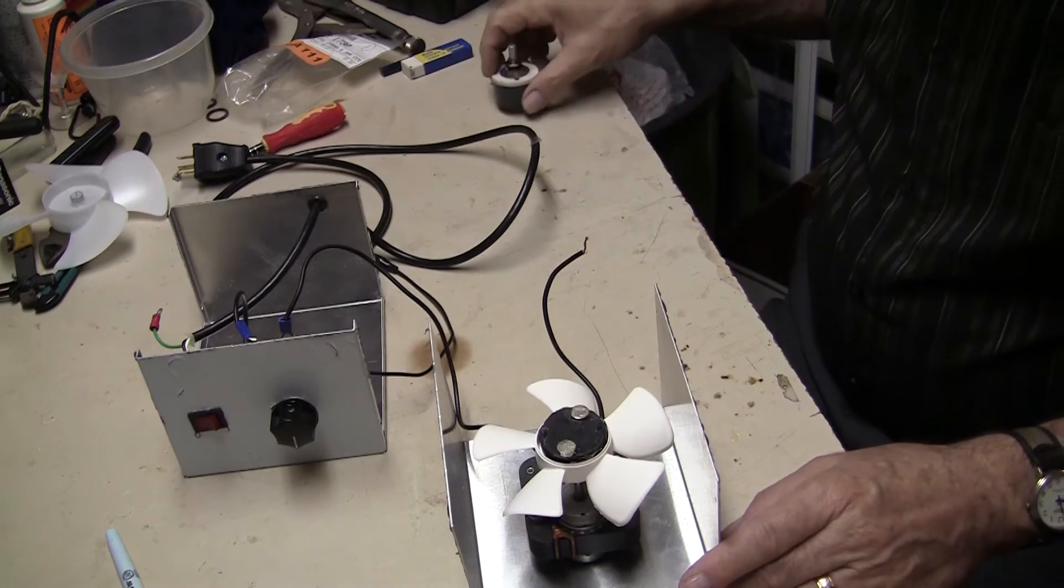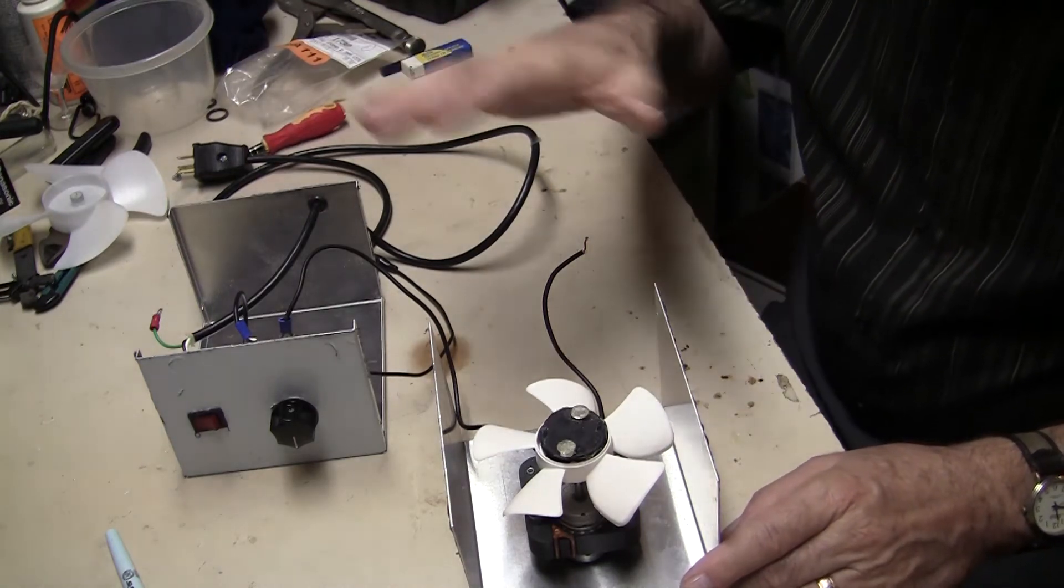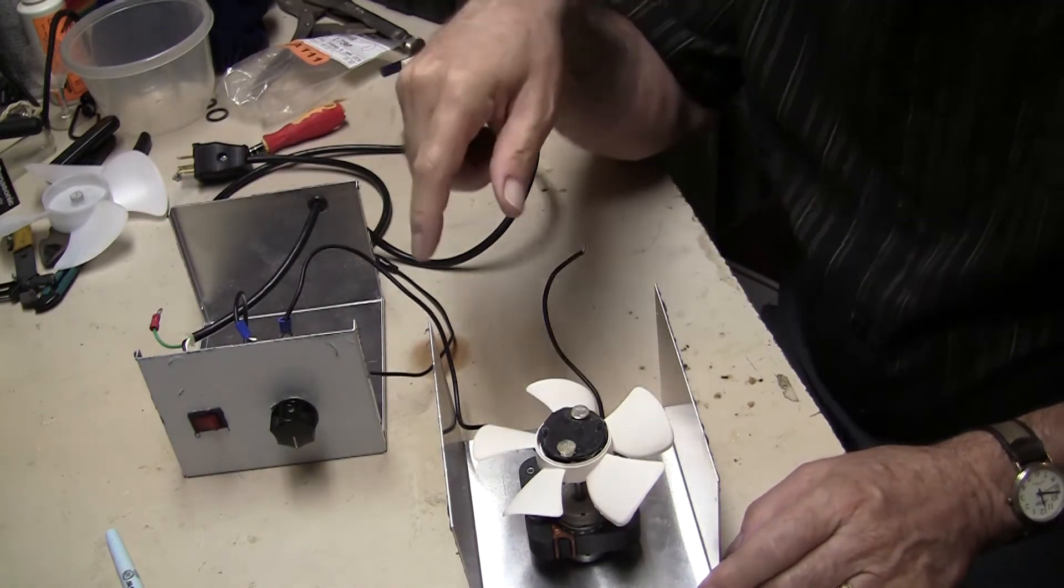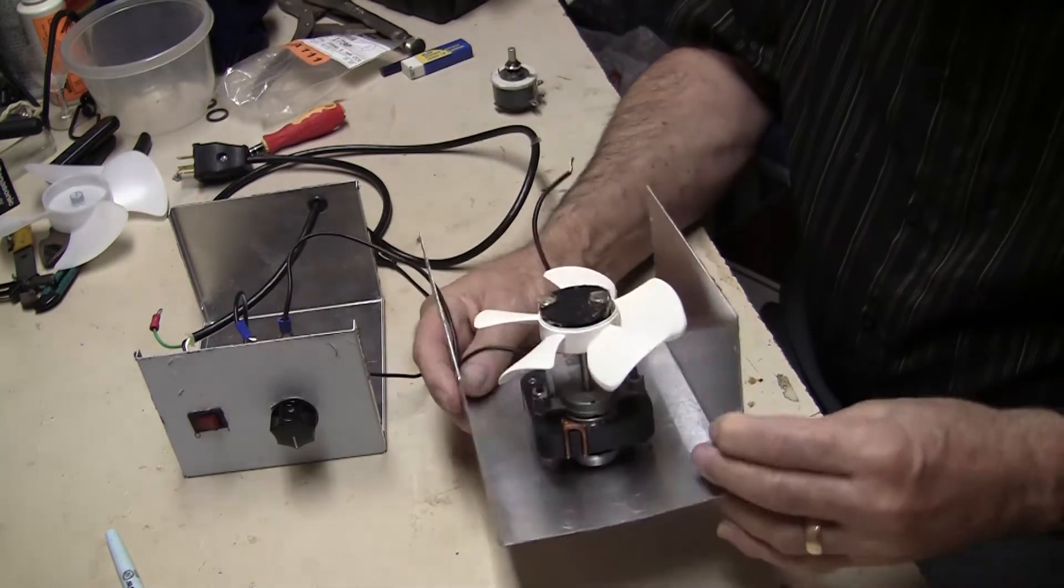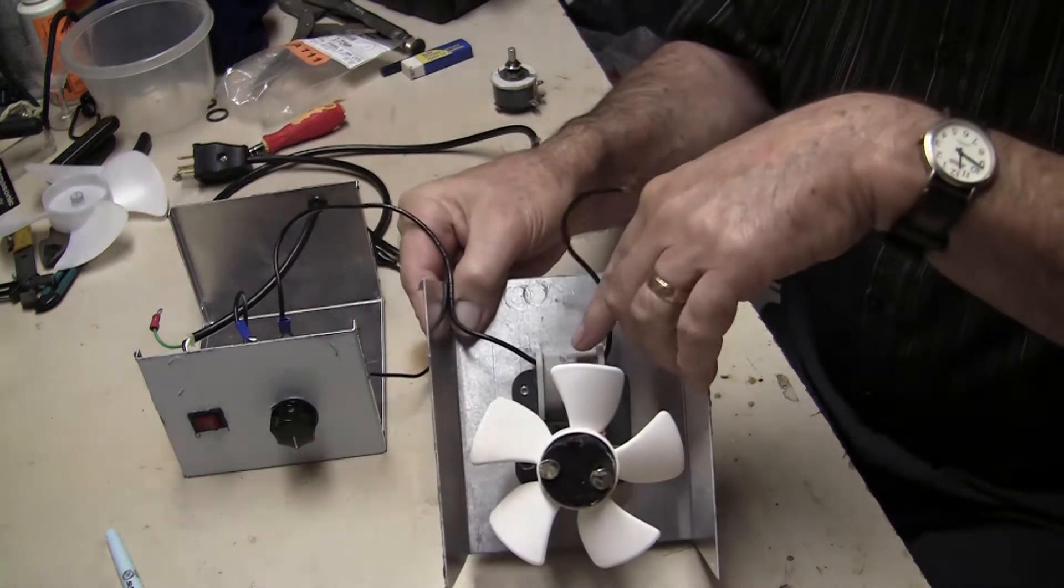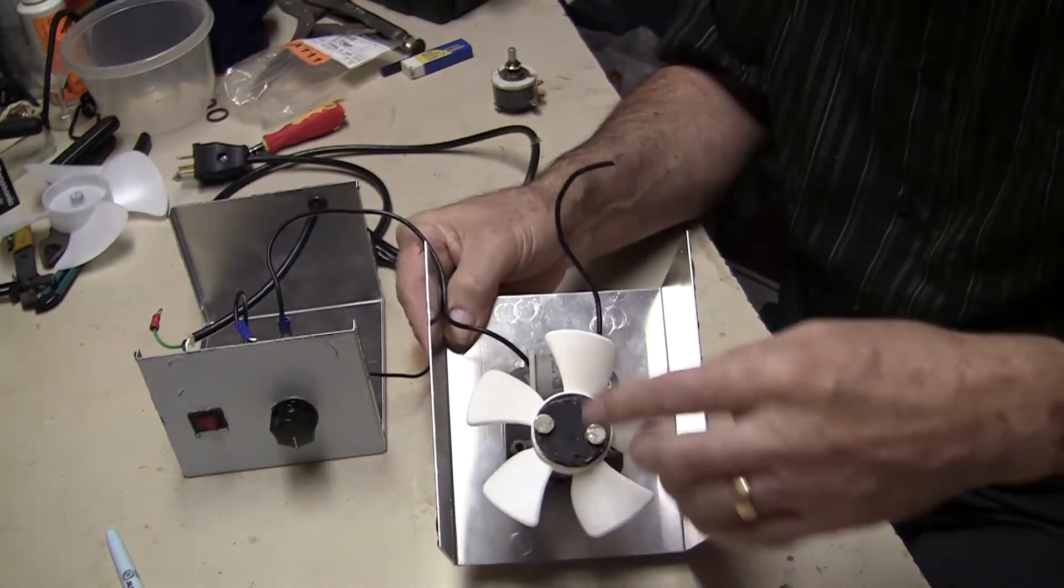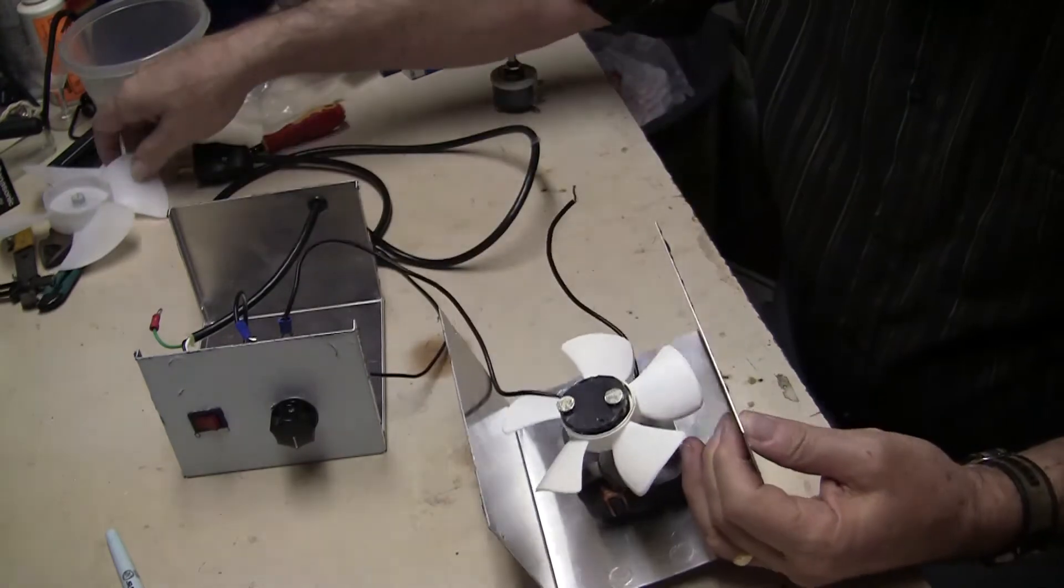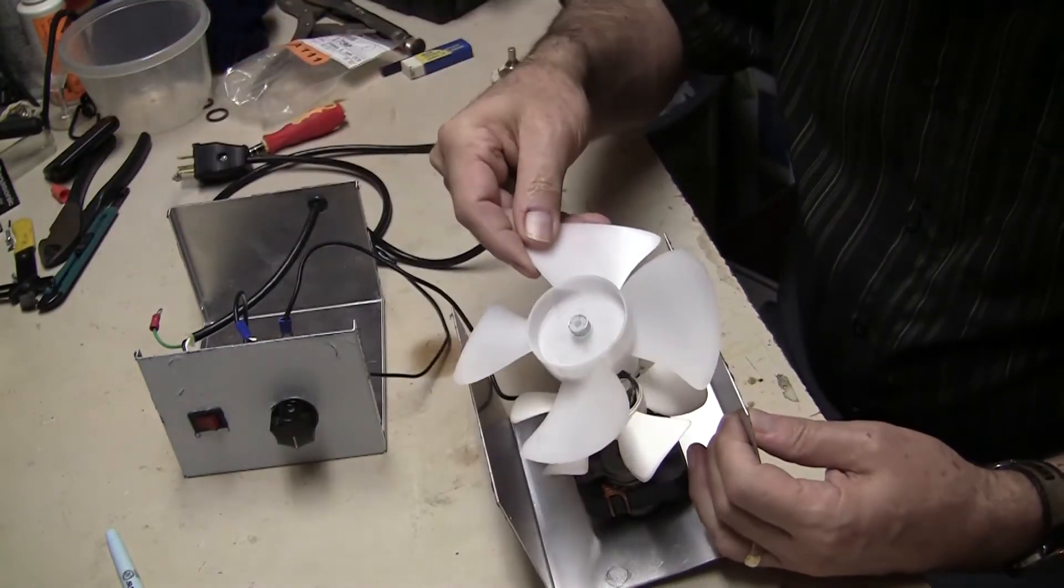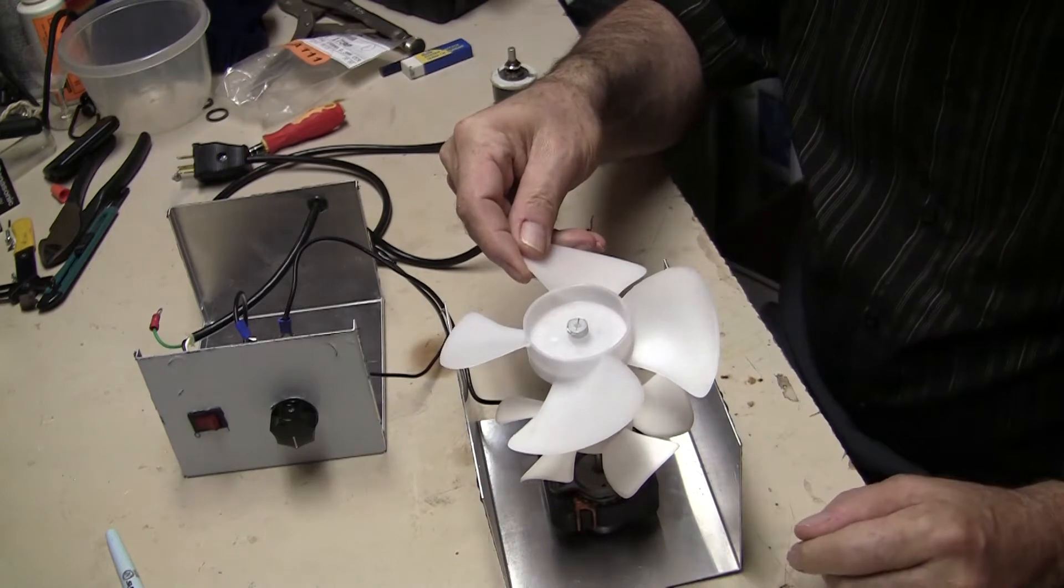The key to being able to control the variability of the speed is this induction motor. So this is it here. It comes as a kit with a fan like this, a small fan, and then a larger fan like this. But we don't need such a large one.